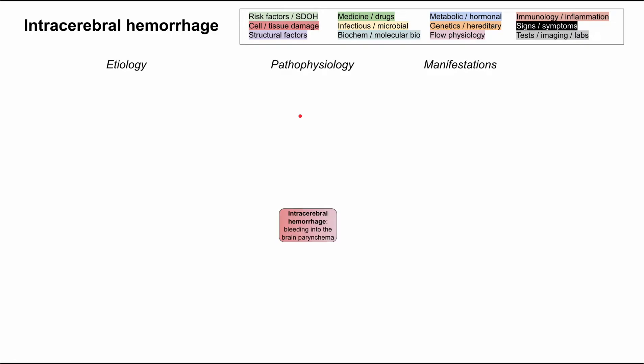Let's define intracerebral hemorrhage. It's defined as a brain bleed specifically into the brain parenchyma. An intracerebral hemorrhage is a type of stroke categorized under hemorrhagic strokes, and it differs from subarachnoid hemorrhage in that you have bleeding into the brain parenchyma — the brain tissue itself — as opposed to into the subarachnoid space. Both differ from ischemic strokes, where the brain doesn't get enough blood. In this case, you have too much blood bleeding into the brain parenchyma.